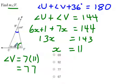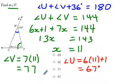Now you can find out what the other angles are. We have angle u. Angle u would be 6x plus 1, and that would be 66 plus 1 is 67.